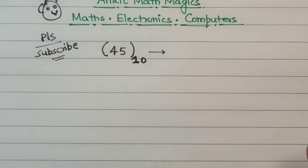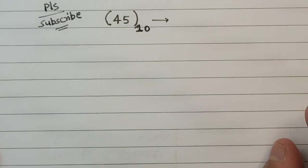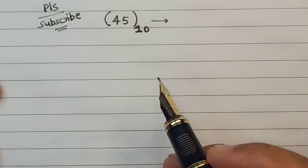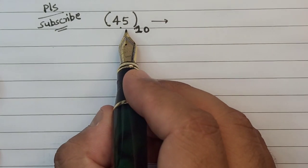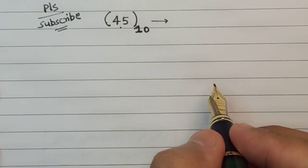Step number one in order to convert a decimal number into its binary equivalent is that we keep on dividing the number given by 2 and make a list of the remainders obtained.